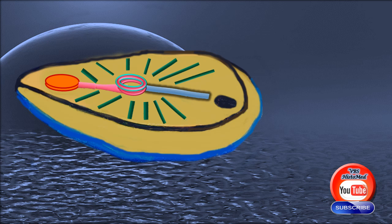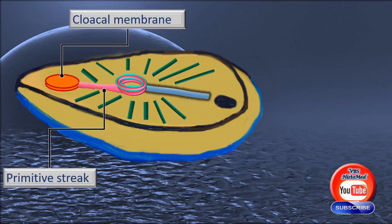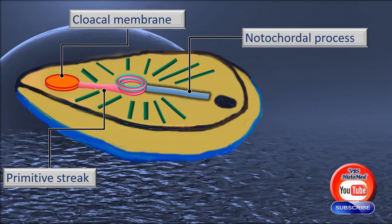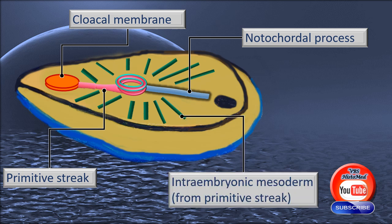In the meanwhile, the primitive streak will start sending out mesodermal cells laterally. What you see there as green lines is nothing but intra-embryonic mesoderm. That's the cloacal membrane, the primitive streak, and the notochordial process.